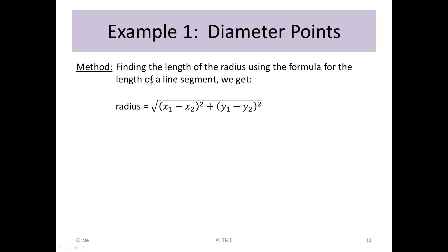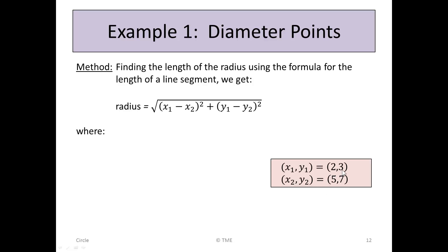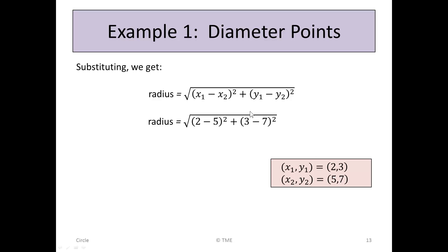Finding the length of the radius using the formula for the length of a line segment: r = √((x1 - x2)² + (y1 - y2)²). This formula is in the line section of your tables. With points (2, 3) and (5, 7), we substitute: (2 - 5)² + (3 - 7)² = (-3)² + (-4)² = 9 + 16 = 25. So the radius is √25 = 5.